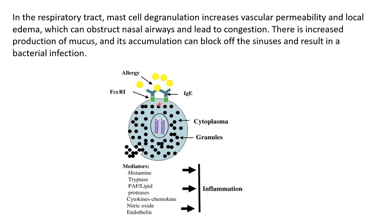This is an FCεRI receptor, which is a high affinity IgE receptor. This IgE antibody binds to the FCεRI receptor, and then the allergens bind onto these antibodies present on the surface of the mast cell.